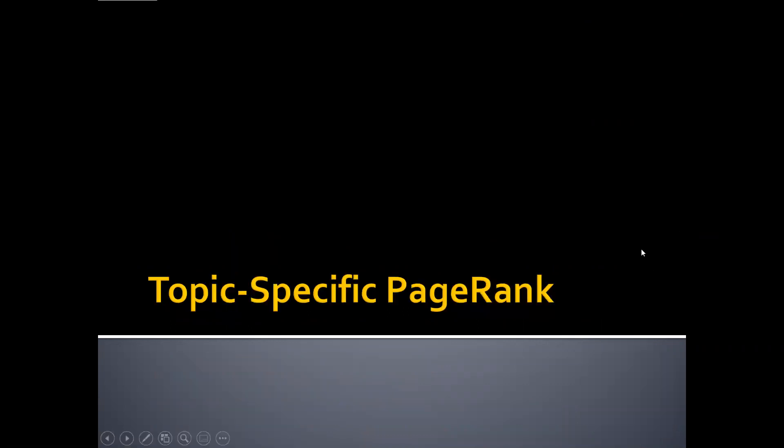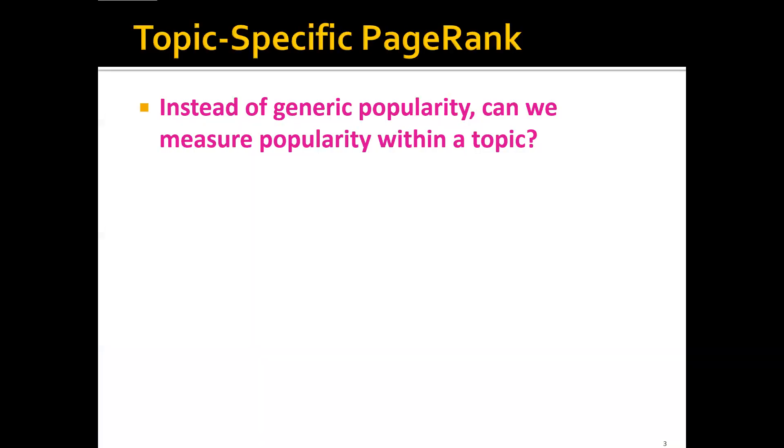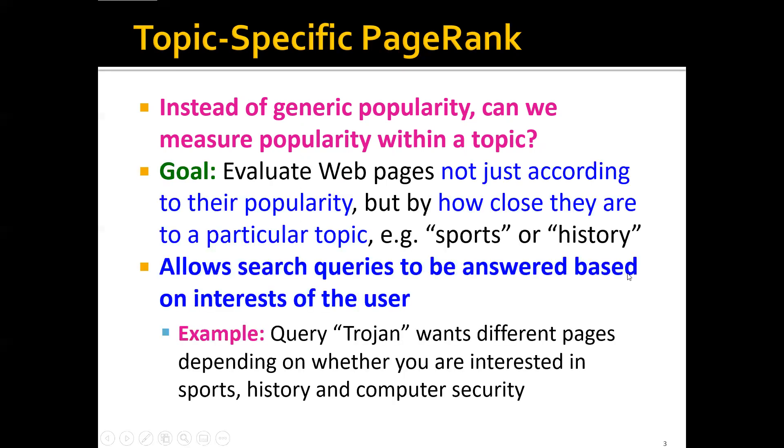Now let's start with topic-specific PageRank, or personalized PageRank. Remember that in the original or standard PageRank, it essentially just measures the generic popularity irrelevant of the topic of each web page. But instead of generic popularity, can we measure the popularity within a topic? So basically, the goal of topic-specific PageRank is to evaluate the web pages not just according to their popularity, but also by how close they are to a particular topic, for example, sports or history.